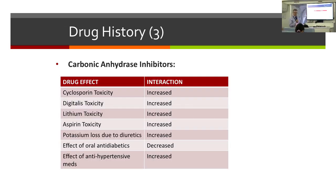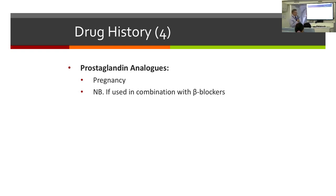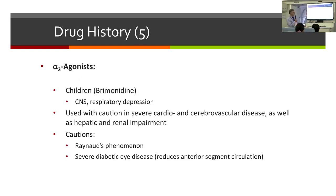Carbonic anhydrase inhibitors such as dorzolamide and brinzolamide can have interactions with numerous drugs, so it's important to take a full drug history. Be aware that prostaglandins should be avoided in early pregnancy. The most important interaction to remember is with alpha-2 agonists such as brimonidine — brimonidine can cross the blood-brain barrier and in very small children can have severe systemic side effects. Always avoid brimonidine in children under approximately six years of age. Apraclonidine (iopidine) is also an alpha-2 agonist but does not cross the blood-brain barrier, making it safer to use in children.